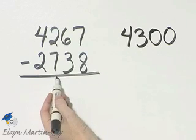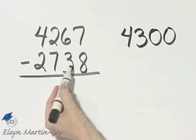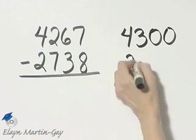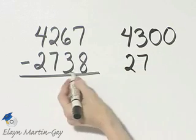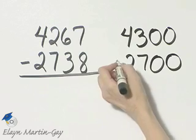Let's do the same thing here. Round to the nearest hundred. Hundreds place. This digit is less than five. I do not add one to this digit. Two, seven, and then two zeros as placeholders. To the nearest hundred I have 2,700.